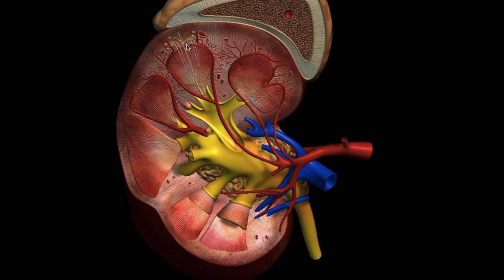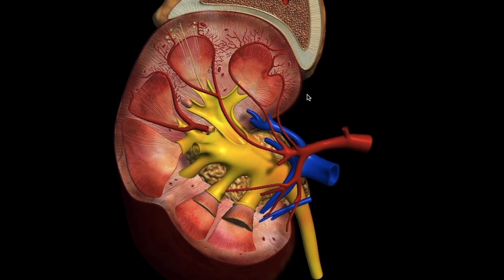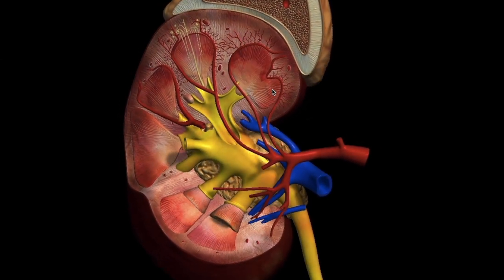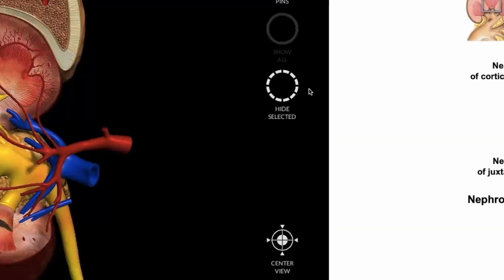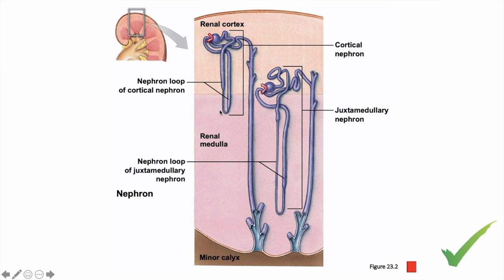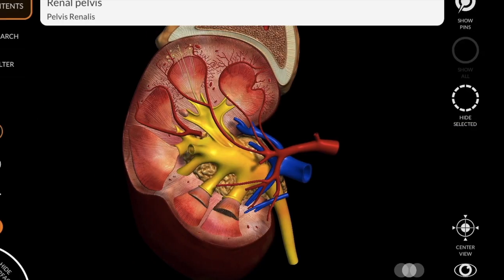If you look at these tiny little yellow tubes, these are the nephrons of the kidneys. We're going to spend 90% of our time studying the physiology of the nephron, the functional unit of the kidney. There are two kinds of nephrons. The cortical nephron is primarily in the cortex, and the juxtamedullary nephron has its entire nephron loop found in the pyramid in the medulla. The juxtamedullary nephron's loop makes the greatest contribution to the osmotic gradient, which is critical to conserving water when dehydrated.